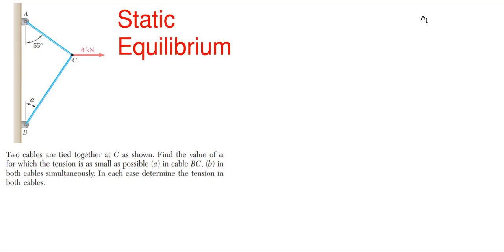We're going to be going over static equilibrium and solving the problem shown on the screen. For this problem, we have two cables that are tied together at point C. We need to find the value of alpha — the angle for which the tension is as small as possible in cable BC, then repeat when the tension is as small as possible in both cables at the same time. For each case, we need to determine the tension in both cables.